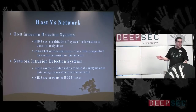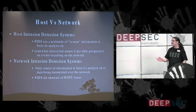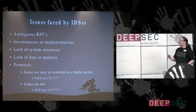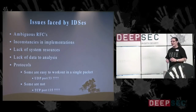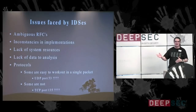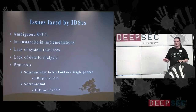Has anyone got any questions about what I've covered so far? The issues that IDSs face include ambiguous RFCs, which is a situation that shouldn't happen — RFCs should be clear, black and white, everyone should know where we're at. But that really doesn't happen.